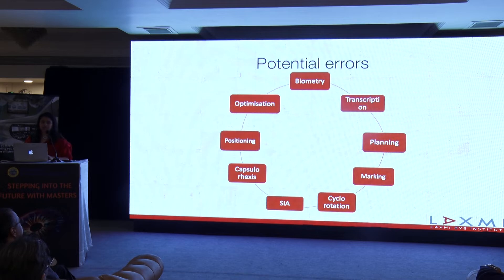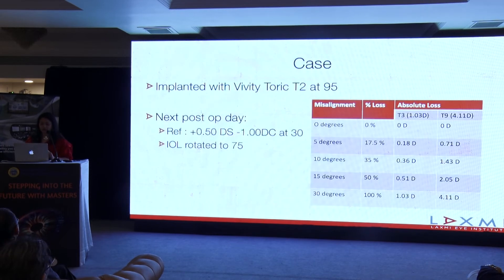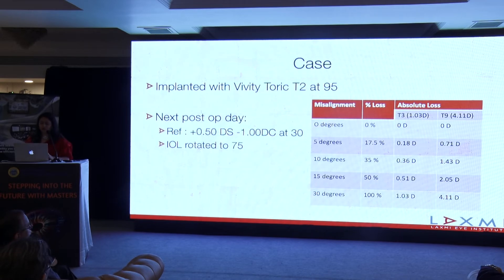Many things can lead to residual astigmatism, and we have to be meticulous to follow each of these steps correctly. These errors are most significant when lower powers of astigmatism are corrected. This was what I ended up with — a residual astigmatism after a toric Vivity implantation.